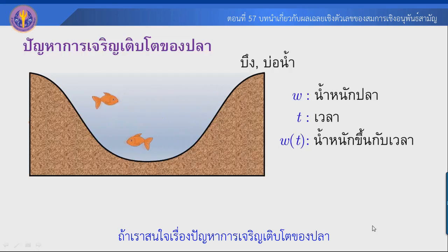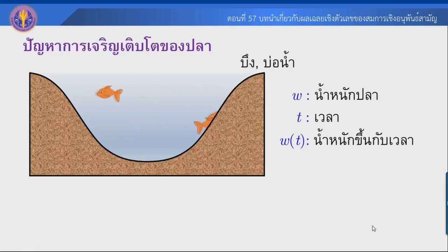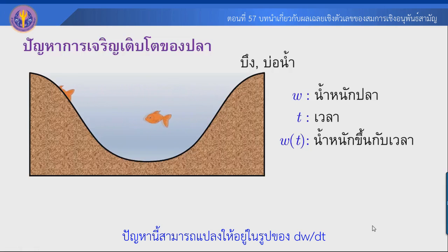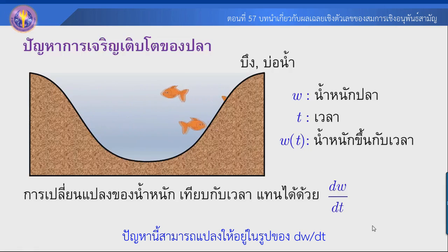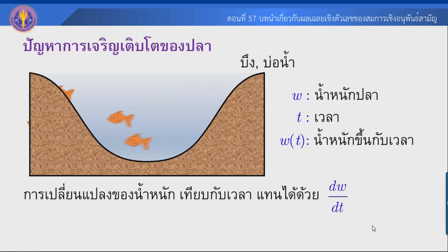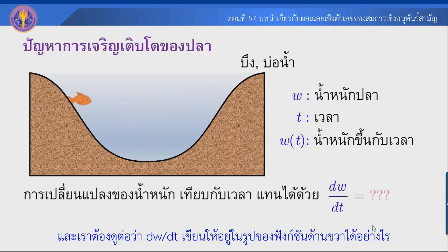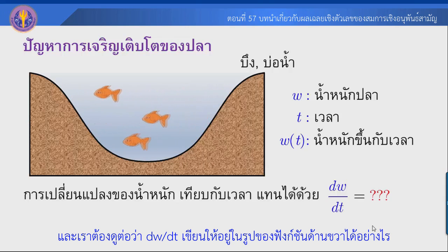If we are interested in this problem, the equation is expressed as dw/dt, which is a function describing the rate of change of fish weight over time. We need to look at what dw/dt depends on in this model.